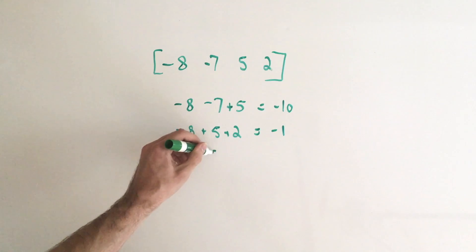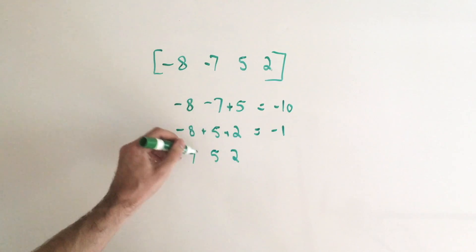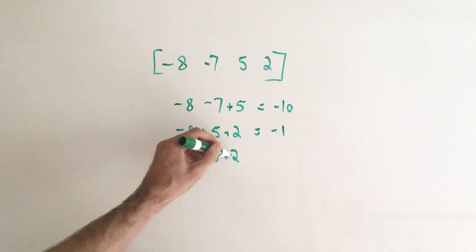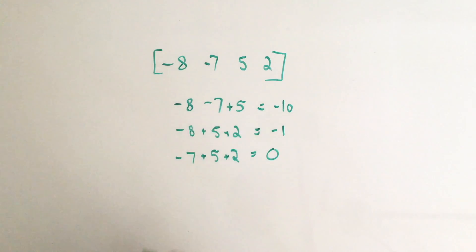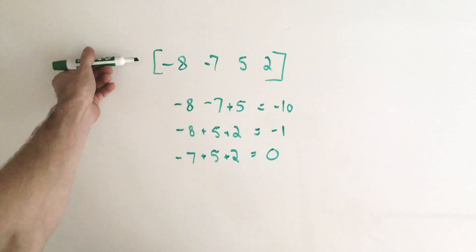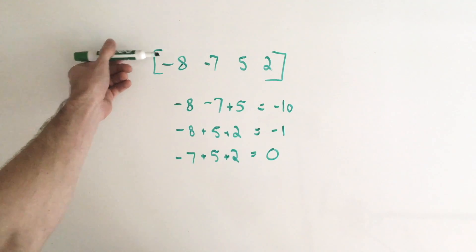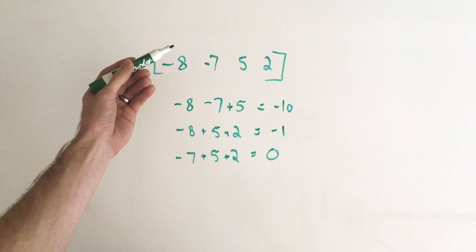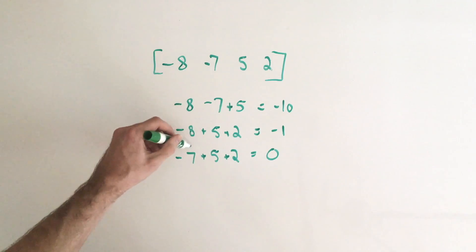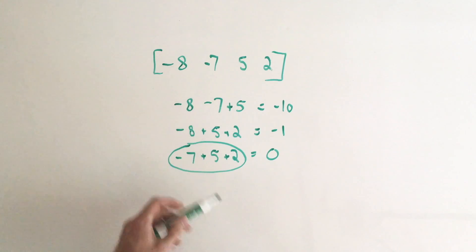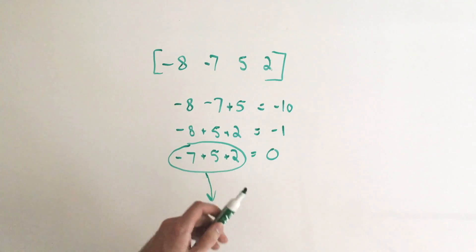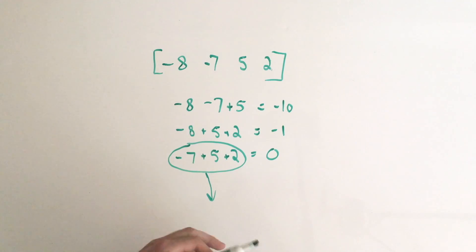And then the last combination we can try would be negative 7, 5, and 2, which when summed up does give us zero. So in this particular input case, where we have negative 8, negative 7, 5, and 2, the only combination of three numbers that sum to zero would be that combination. So we'd print this out to the console or return it in some type of array, and that would be our solution. That basically sums up the three-sum problem.